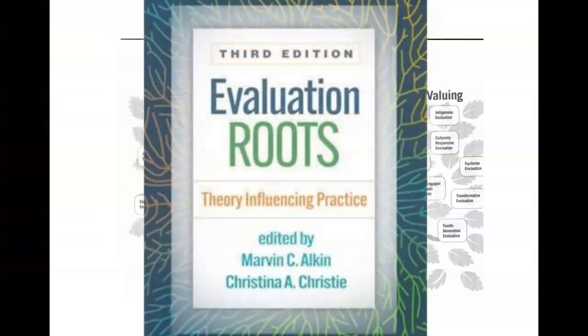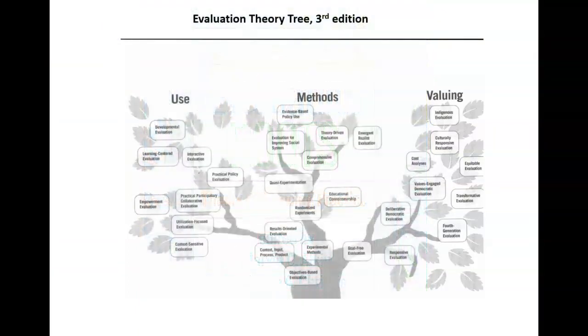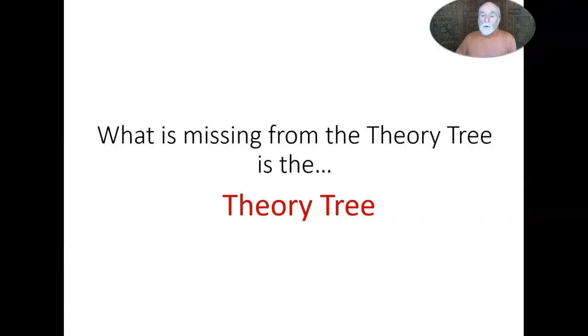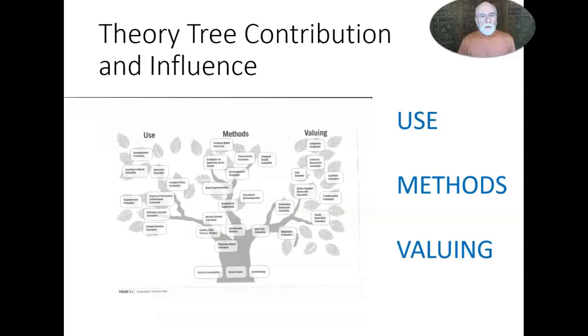Despite being a hot-off-the-press new edition, the 2023 Evaluation Theory tree, in my judgment, is already out of date. Out of date because the book fails to include the influence and contributions of the evaluation theory tree to theory over the last two decades. What is missing from the theory tree is the theory tree. I'm arguing that over the last two decades, the theory tree contribution has been to have everyone thinking about how to approach evaluation address use, methods, and valuing in such a way that they don't become distinct and prioritized, but instead become interrelated.